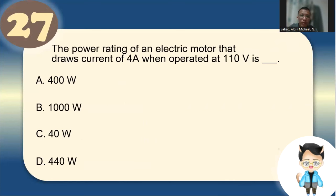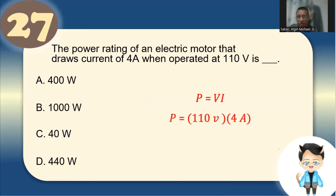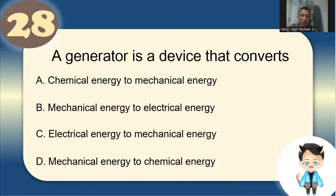Number 27: The power rating of an electric motor drawing 4 A at 110 V is found using P = V × I = 110 × 4 = 440 watts. Number 28: A generator converts mechanical energy to electrical energy.